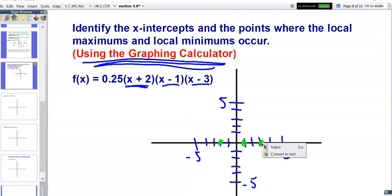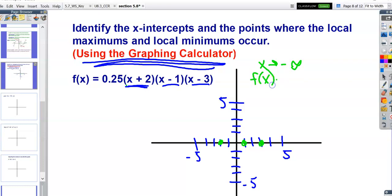Recall when we were talking about end behavior, this is going to end up being a degree 3 polynomial. Because, if we multiply three binomials together, we should be getting a trinomial. Our lead coefficient is positive. So that means that as x is approaching negative infinity, f of x is also approaching negative infinity. And as x is approaching positive infinity, f of x is also approaching positive infinity.